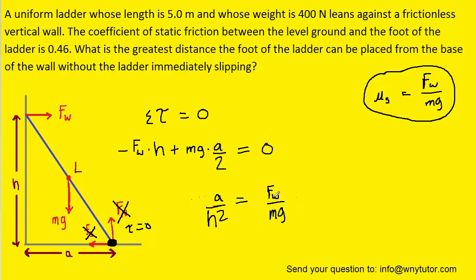So we can see the ratio Fw to mg is equivalent to A over 2h. And we can also see that that ratio is equal to mu s. So we're going to set mu s equal to A over 2h.